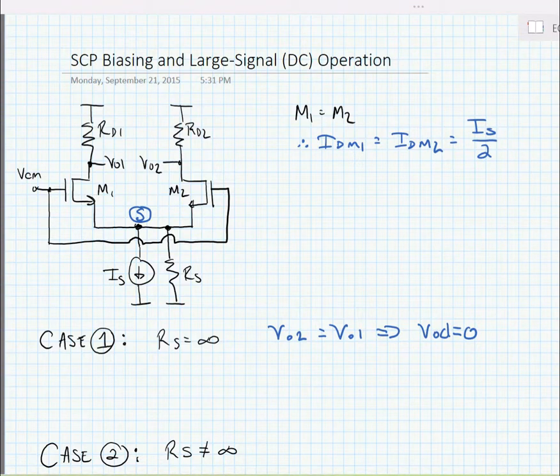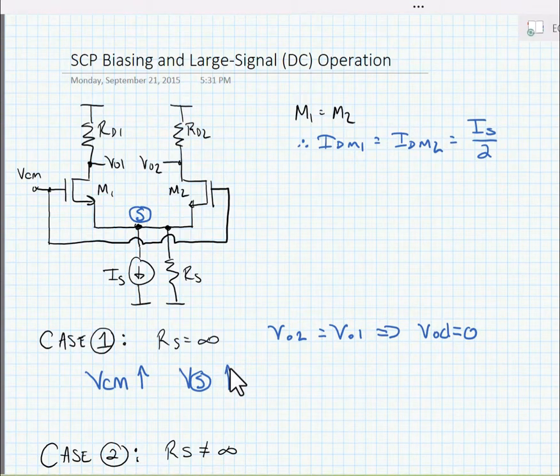Now, if we increase VCM by some arbitrary value, we would expect that the source terminal would also increase. But the output voltage still doesn't change because there's a constant bias point. In other words, the source goes up just by the amount that the gates went up, and there's no additional current flow.